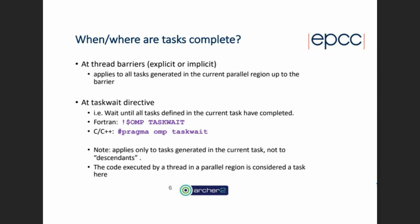We need some guarantees about when tasks are going to be completed. The first answer is at any thread barriers — whether those are explicit barriers with an `!$OMP BARRIER` directive, or the implicit barriers at the end of work-sharing loops or at the end of the parallel region. Whenever we have a barrier, it will not complete until all the tasks generated in the current parallel region before the barrier have completed executing. So at every thread barrier, we guarantee all previously generated tasks have completed before any thread proceeds past that barrier.